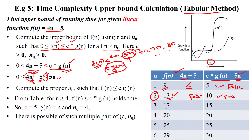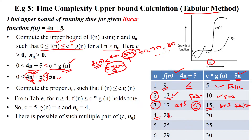At n = 3: f(3) = 4(3) + 5 = 17 and 5(3) = 15, so f(n) ≤ c·g(n) is still not satisfied — false. At n = 4: f(4) = 4(4) + 5 = 21 and 5(4) = 20, so this is also false and not satisfying the condition.